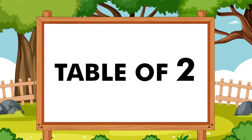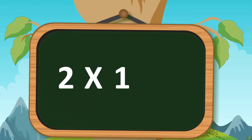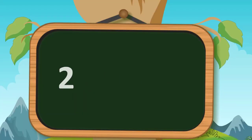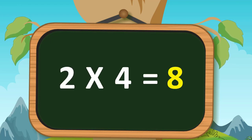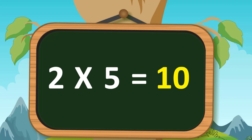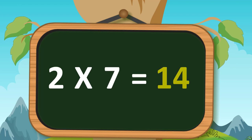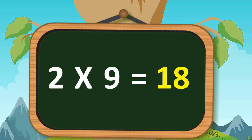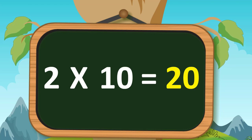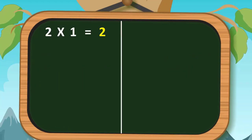Hello children, today we will learn table of two. Two ones are two, two twos are four, two threes are six, two fours are eight, two fives are ten, two sixes are twelve, two sevens are fourteen, two eights are sixteen, two nines are eighteen, two tens are twenty.